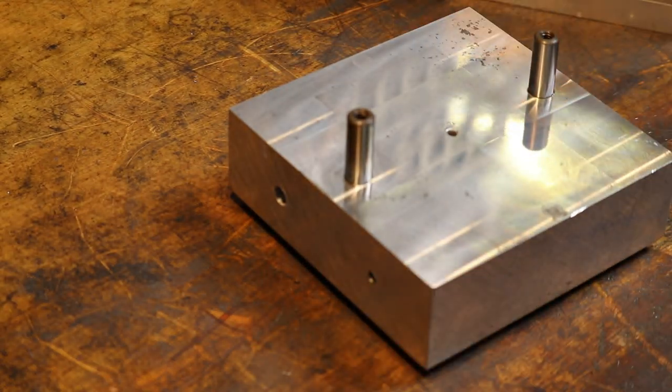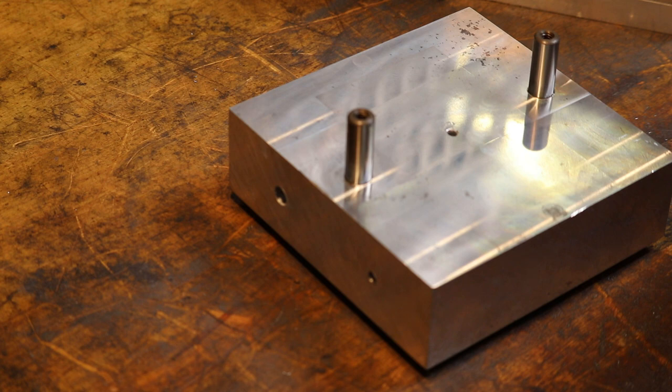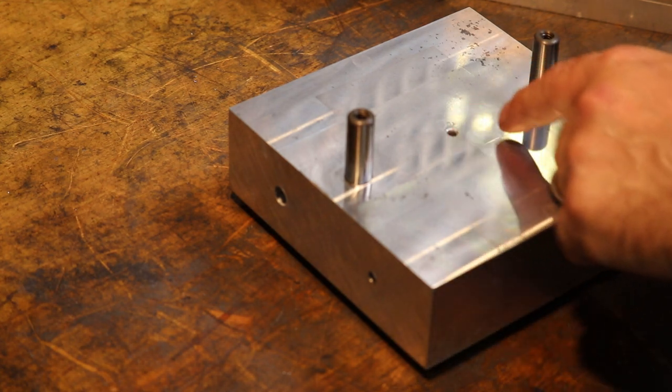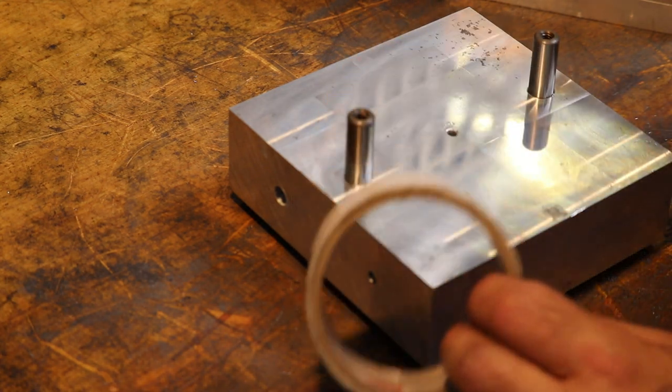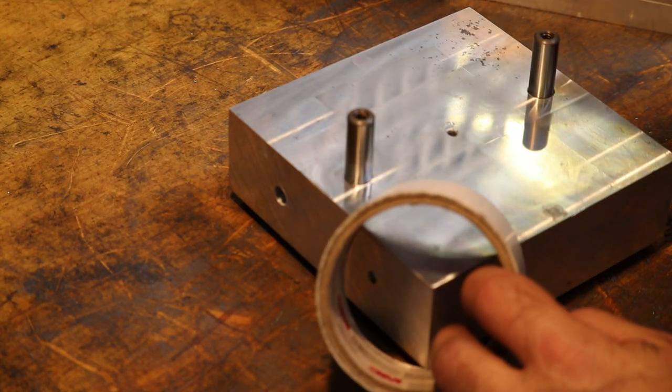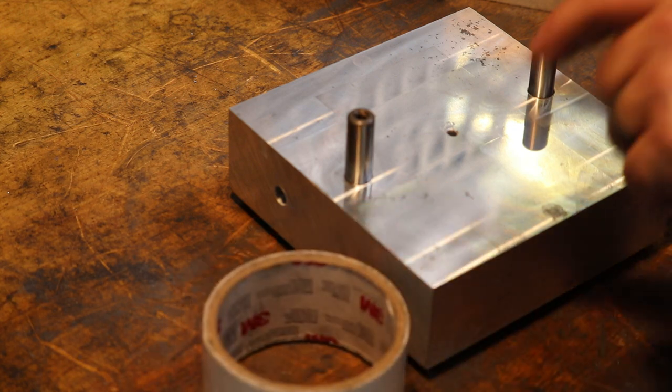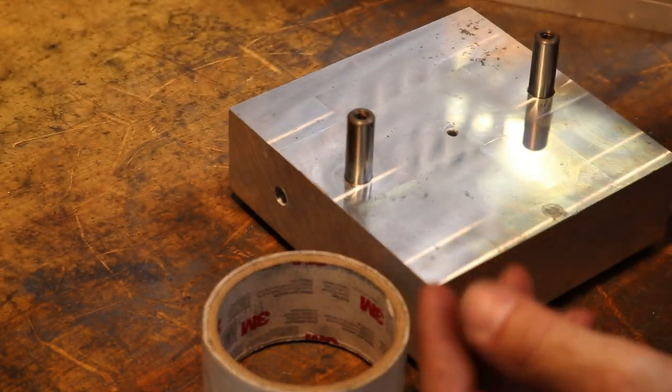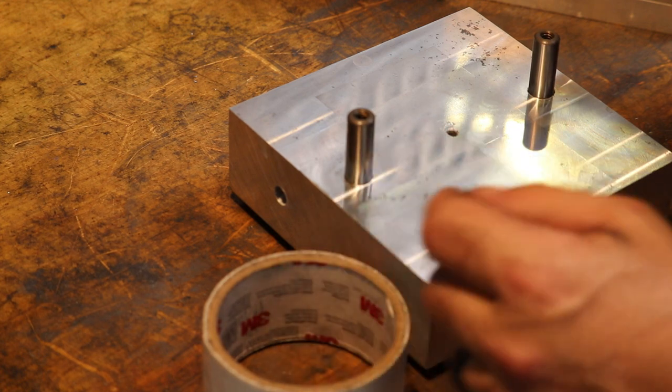To do that we are going to use the sandblasting cabinet and effectively what we need to do is mask off this area of the part with what I use, just duct tape. The idea with the duct tape is to have a bouncy surface so that when the sand or the glass beads, typically you use half millimeter or 20 thousandths of an inch diameter glass beads or just beach sand,